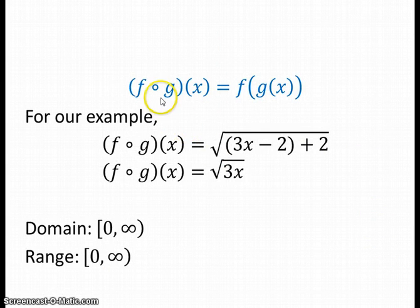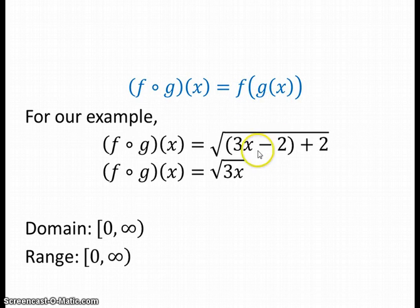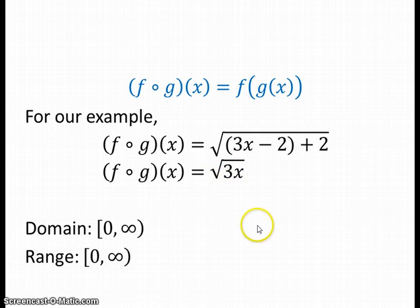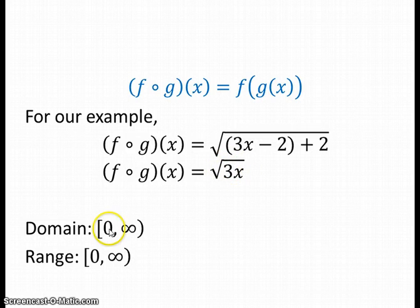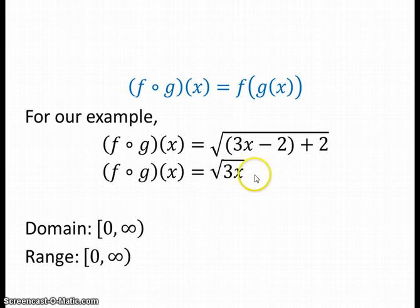Now for function composition. For f composed with g of x, we plug g of x, which is 3x minus 2, into wherever we see x in f of x. This simplifies nicely to the square root of 3x. The domain is zero to infinity, since we need a zero or positive number inside the square root. The range is also zero to infinity, since plugging in zero or a positive number gives a zero or positive output.